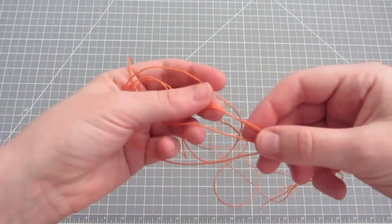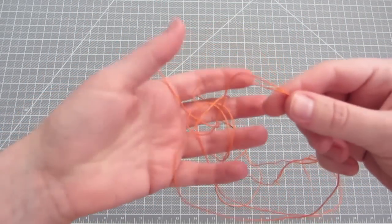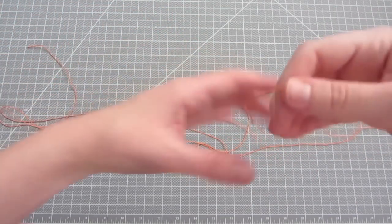Wax thread reduces tangles and makes your thread more manageable to bind with. You can buy thread that's already waxed or use beeswax to make your own.